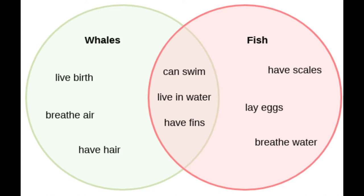Once they are done, they can share that with the class. Another way you can do it is by building a Venn diagram of things that one student does that's unique to them and another student, and then in the middle, you can place things they have in common.